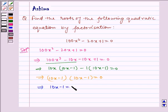Which implies 10x - 1 = 0 and 10x - 1 = 0, which implies x = 1/10 and x = 1/10.